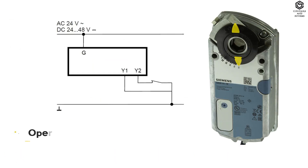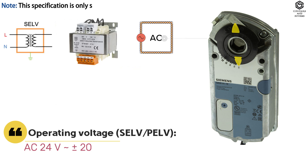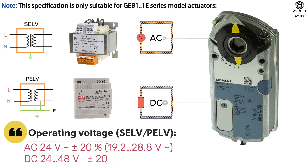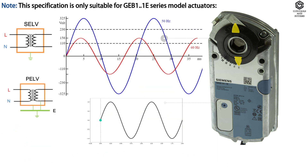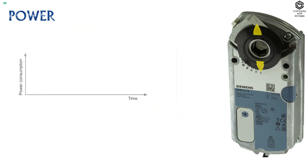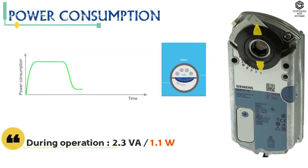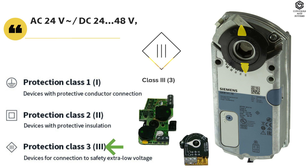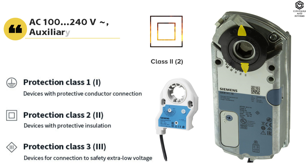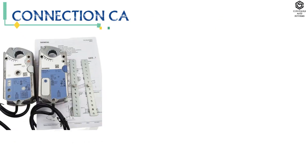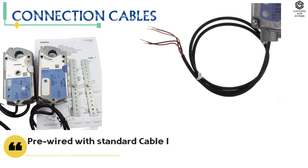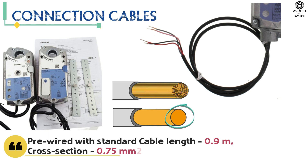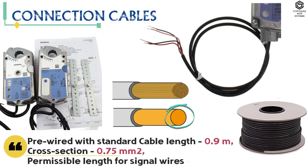Electrical data: operating voltage is AC 24 volt (±20%) or DC 24 to 48 volt (±20%). Frequency is 50 or 60 hertz. Power consumption during operation is 1.1 watt, during holding is 0.5 watt. Protection class of 24 volt feedback potentiometer is 3, and of 240 volt auxiliary switches is 2. Pre-wired with standard 0.9 meters connection cables, cross-section 0.75 square millimeters. Permissible length for signal wires is 300 meters.